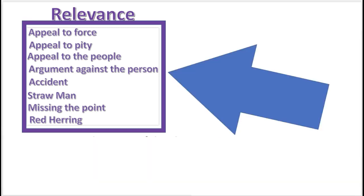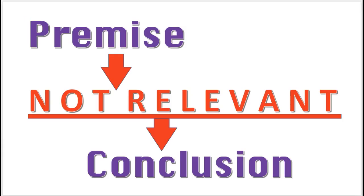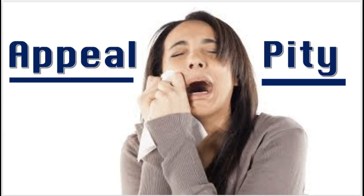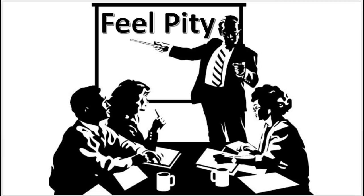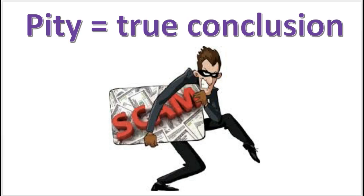We're starting with the fallacies of relevance, which means the fallacy occurs when the premise is logically irrelevant to the conclusion. This video will explain the fallacy of appealing to pity. The appeal to pity fallacy is when the argument attempts to evoke emotional pity from the audience in support of their conclusion.